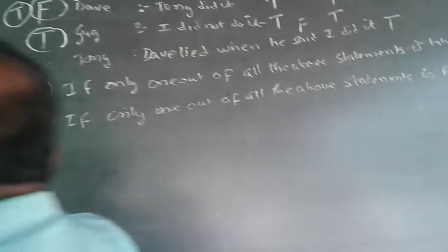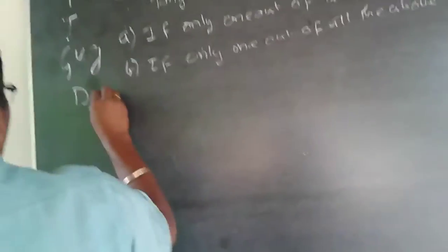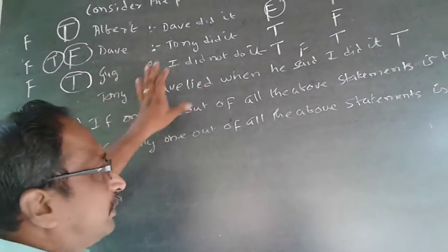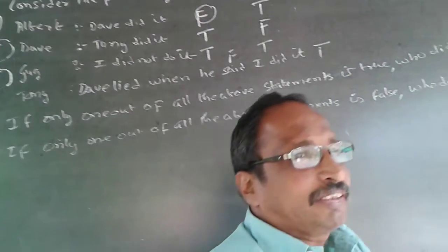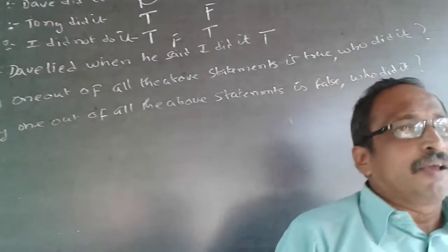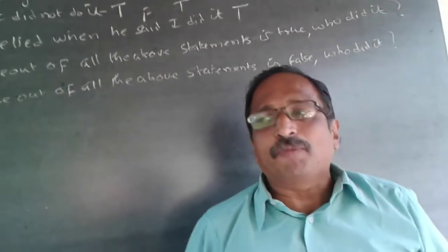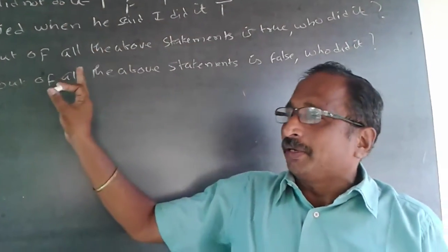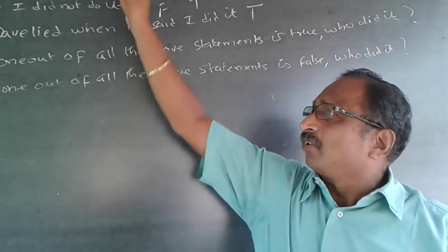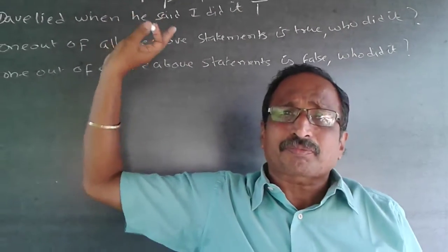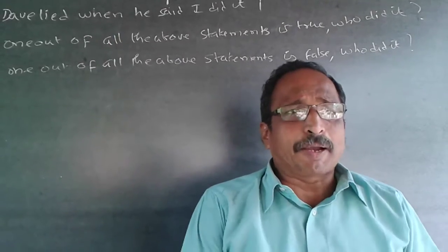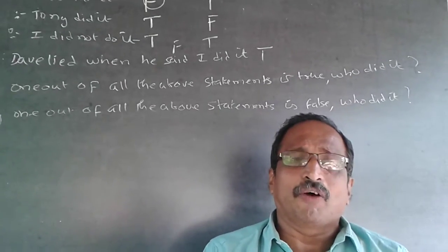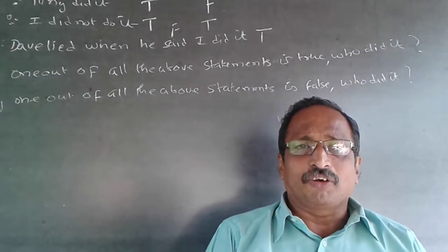So A is Gug and D is Dave. Always use elimination of possible alternatives. Don't think only one statement is right — keep your mind open. Any one of them could be right, any one could be false. Follow one by one and you can get your answer faster. Subscribe to my channel — it is free of cost. Wish you all the best, thank you.